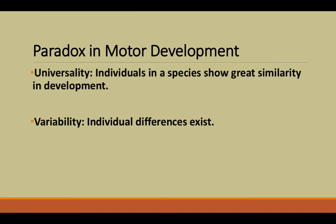Since there is individuality and variability, we say there's a paradox in motor development. Individuals in a species show great similarity in development, but there's also a lot of variability in that each individual's motor behavior and path of development is very different.